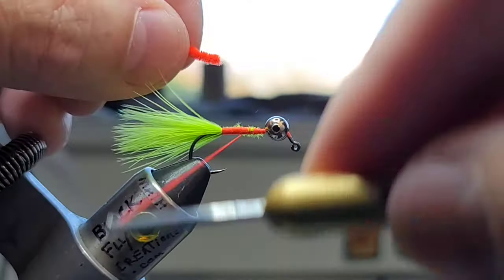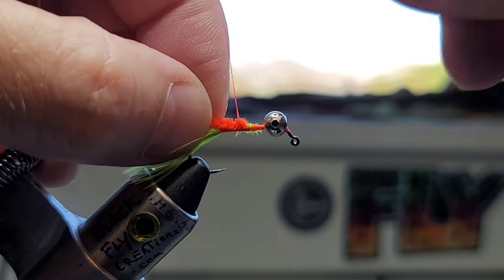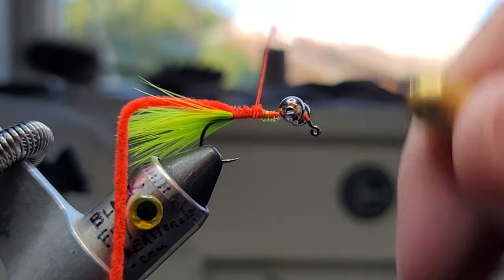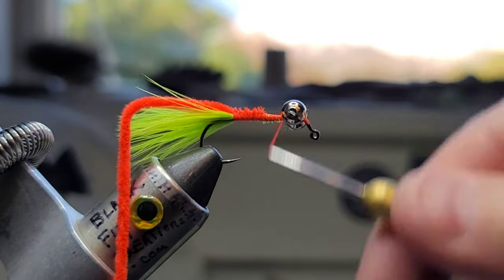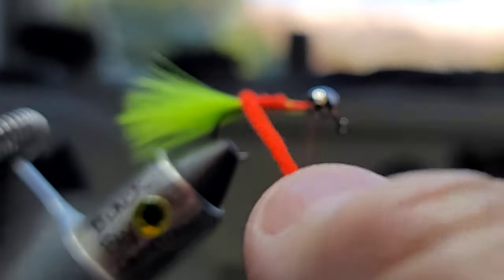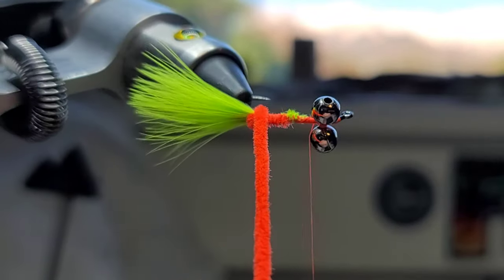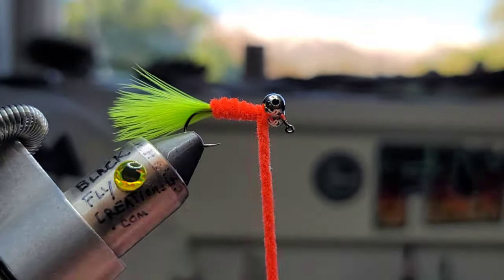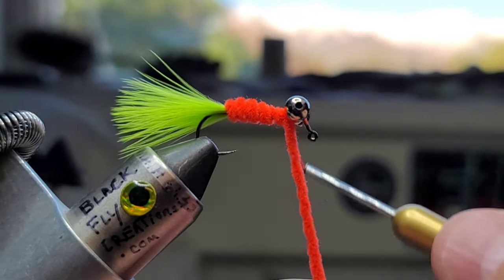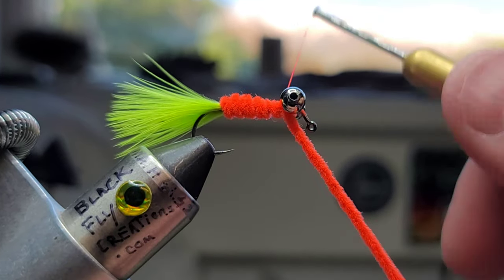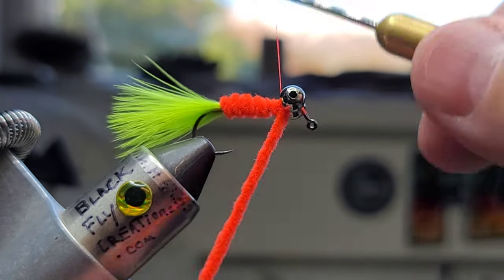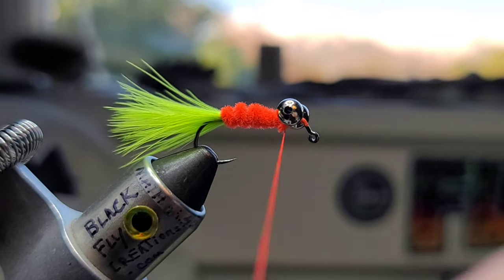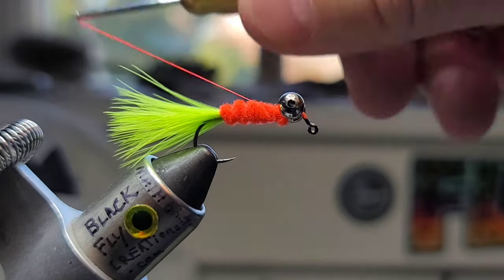Next I've just got some fluorescent orange UV chenille, pretty much the same thing you'd use for a San Juan worm. We'll come back and grab that, tie that in. Advance our thread forward. Now I'm just going to use the rotary on the vise, just do touching wraps forward.